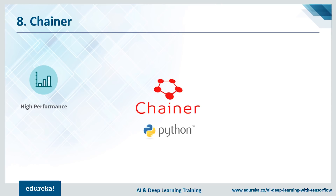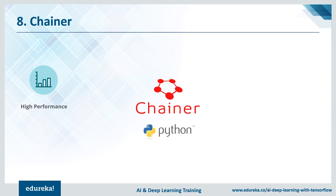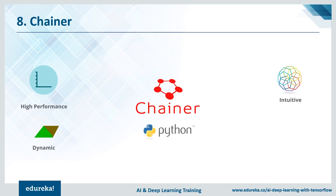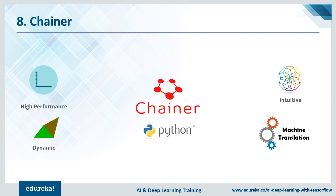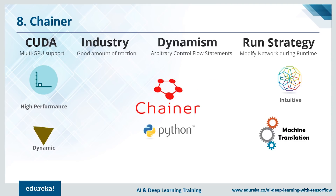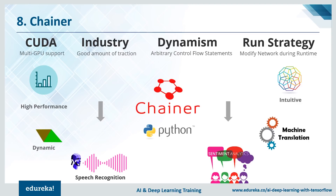With performance comes a slight prerequisite on how easy it is to get around and get the work done with the framework. Chainer is intuitive and coding in it is really easy — I would rate it about 6 on 10. It provides really good dynamism and helps with understanding the flow of the code better, which in turn works well for machine translation. Chainer is widely used mainly for speech recognition and sentiment analysis.